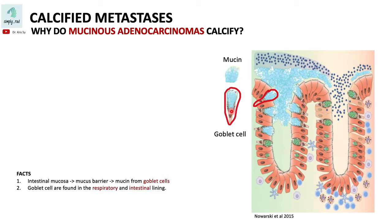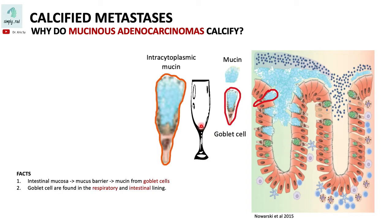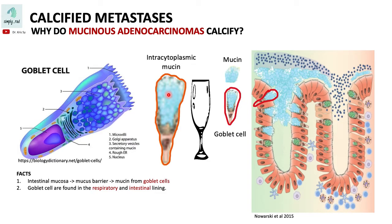The goblet cell gets its name from its shape. Mucin is stored within the cells — that's why it's called intracytoplasmic mucin — and when they're inside the cell, they're stored inside secretory vesicles. Here's another picture — see the vesicles inside the cell? They have mucin within them.